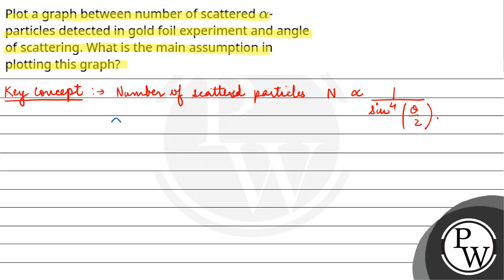Now we will plot this graph because it's inversely proportional here. Here we have number of scattered particles, and here is the scattering angle.